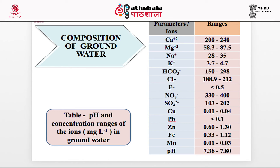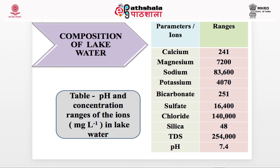A table shows the pH and concentration ranges of ions in milligrams per liter in groundwater: calcium 200–240, magnesium 58.3–87.5, sodium 28–35, potassium 3.7–4.7, bicarbonate (HCO₃⁻) 150–298, chloride 1.89–2.2, fluoride less than 0.5, nitrate 330–400, sulphate 103–220, copper 0.01–0.04, lead less than 0.1, zinc 0.60–1.30, iron 0.33–1.12, manganese 0.01–0.03, and pH 7.36–7.80. A similar table for lake water shows: calcium 241, magnesium 7,200, sodium 83,600, potassium 4,070, bicarbonate 251, sulphate 16,400, chloride 140,000, silica 48, TDS 25,400, and pH 7.4.